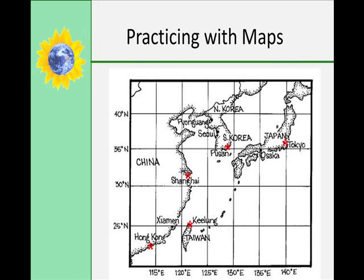So we're going to practice with maps. We talked about the development of longitude and latitude, and that is our most common coordinate system. So what I would like you to do is pause this lecture and write down the approximate longitude and latitude locations for each of these cities: Pyongyang, Seoul, Pusan, Tokyo, Osaka, Xiamen, Hong Kong, and Kielong in Shanghai. Go ahead and pause the lecture, and when you're ready, come back. If you would like to check your answers with me, feel free to do so by email or during office hours.